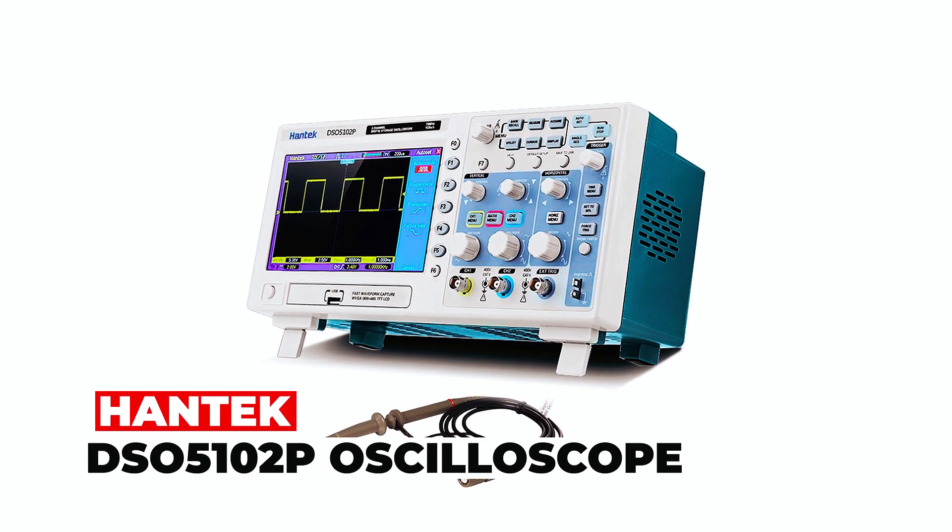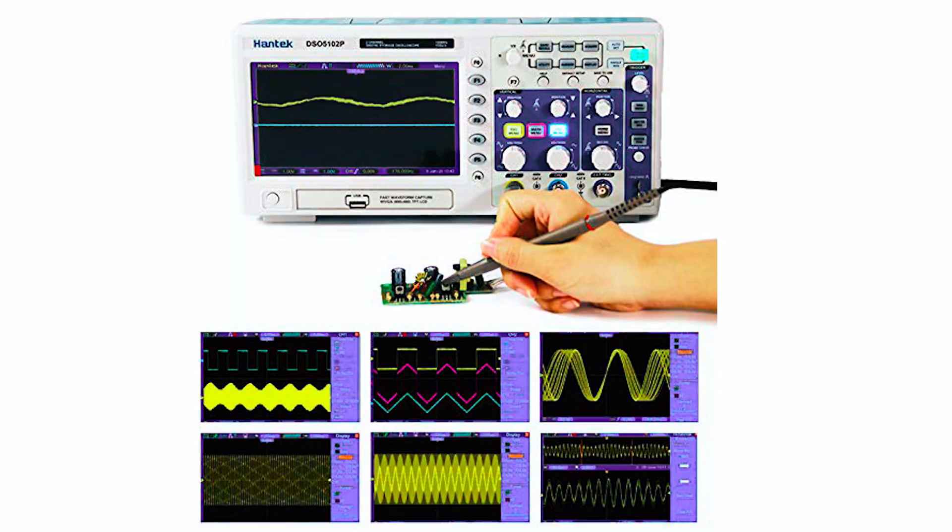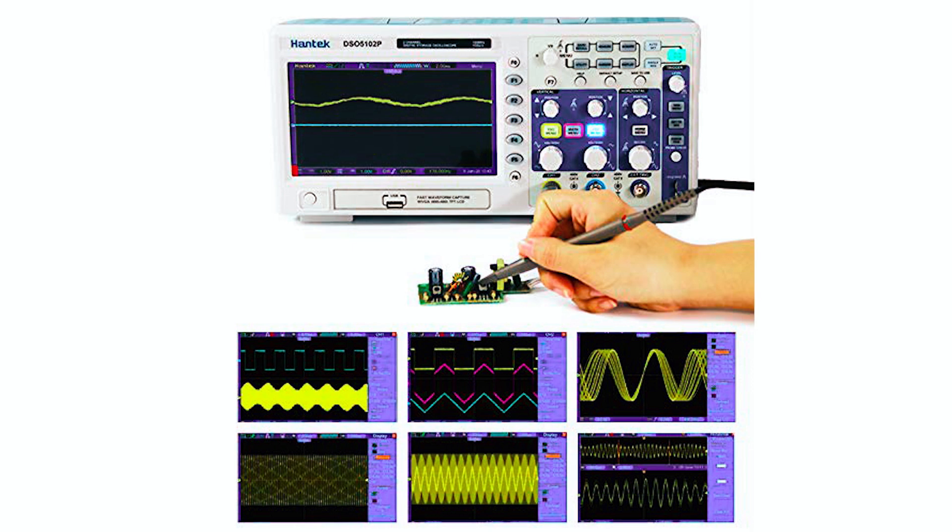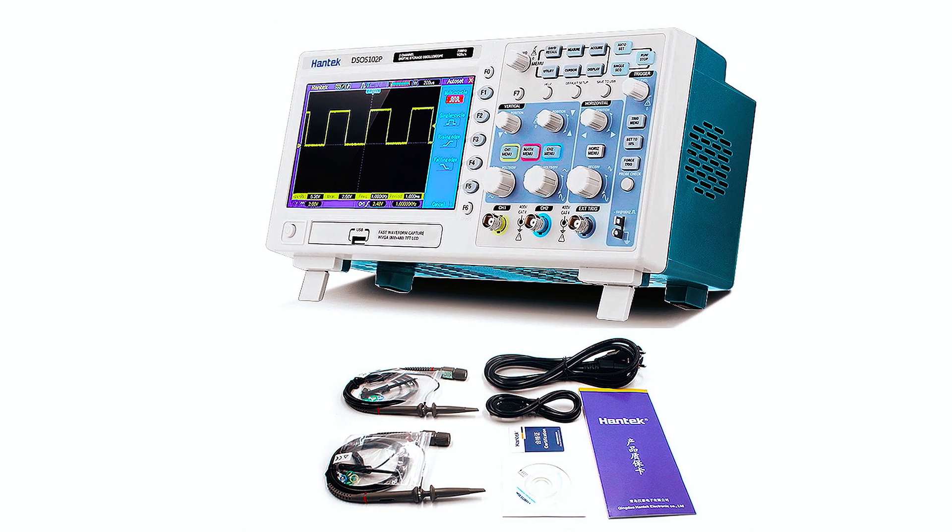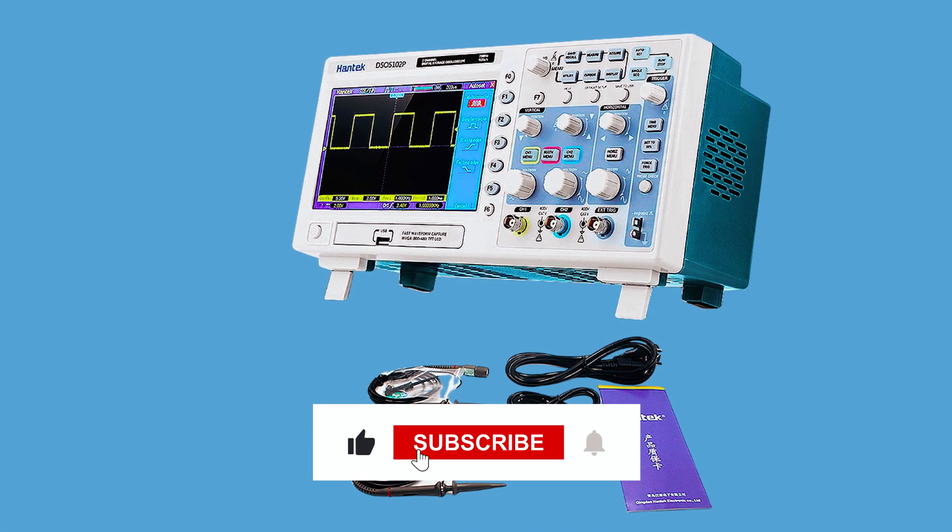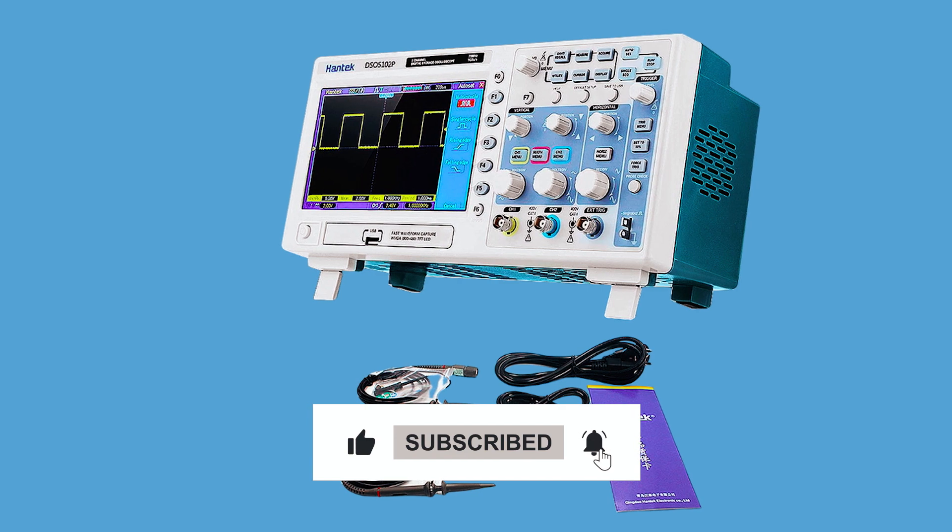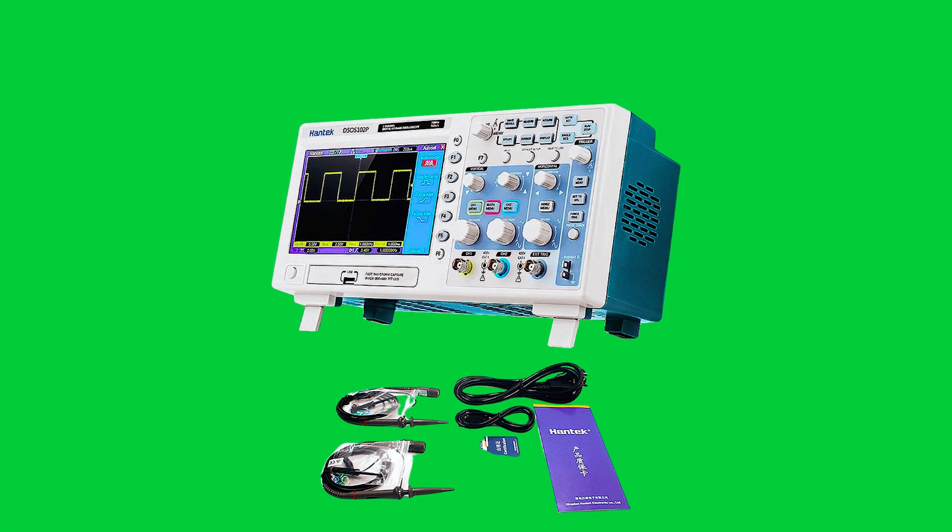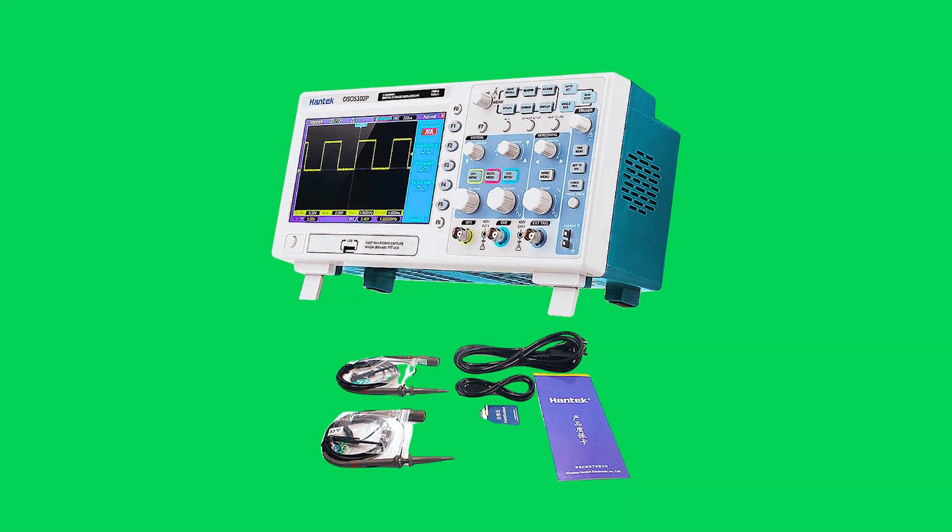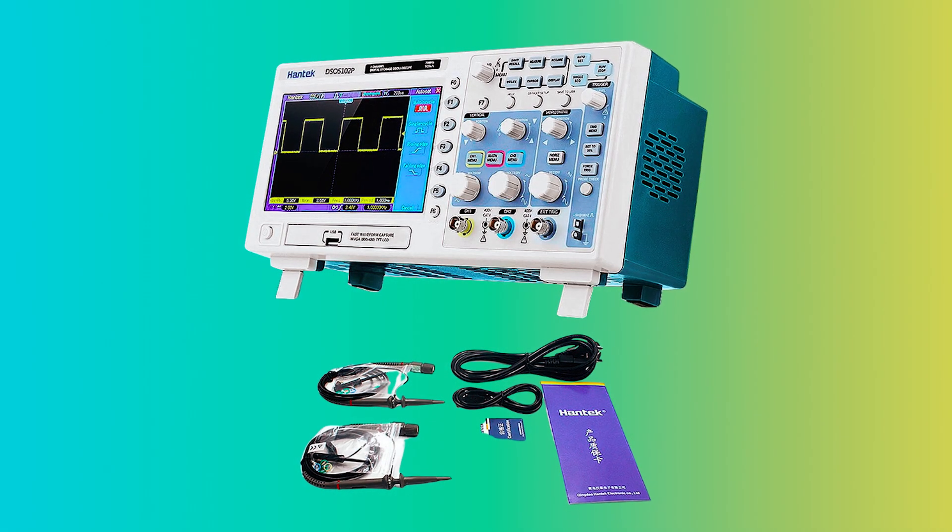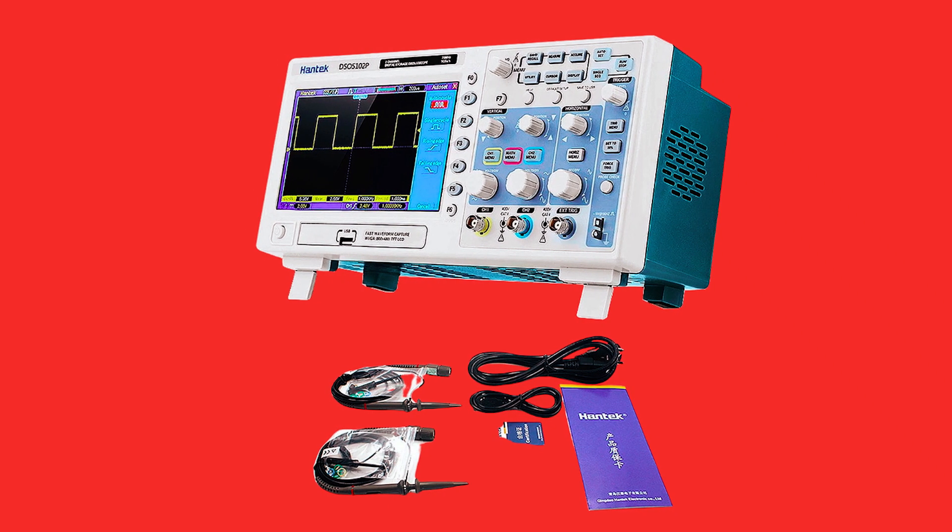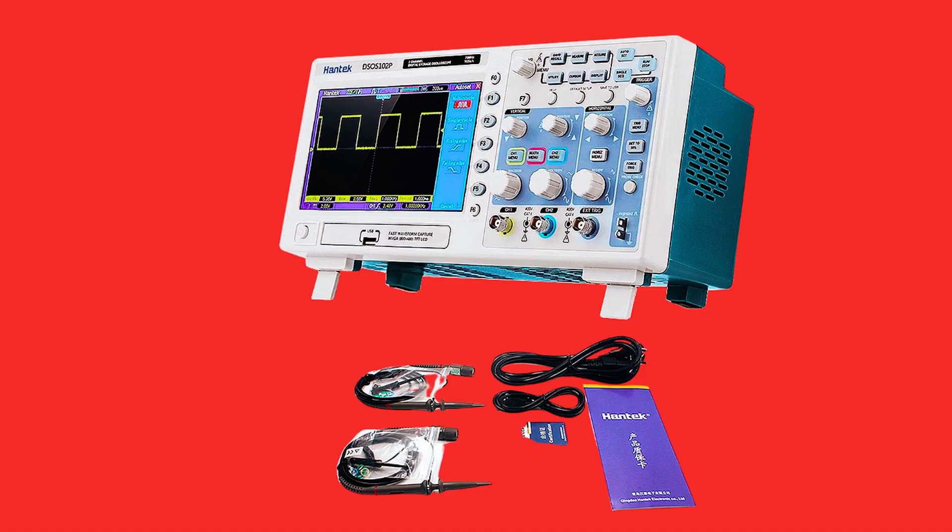HANTEC DSO-5102P Oscilloscope. The HANTEC DSO-5102P Oscilloscope is a powerful and versatile tool designed for electrical engineers, students, and DIY enthusiasts. This oscilloscope offers accurate measurements of AC/DC voltage and current, resistance, diode, and continuity buzzer with its 100 MHz bandwidth and 1 GSa/s real-time sampling rate. The large 7-inch TFT LCD display with a resolution of 800 by 480 provides a clear and detailed view of measured waveforms.